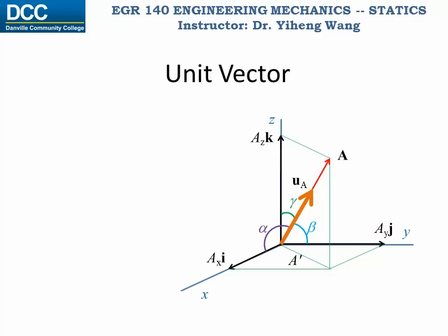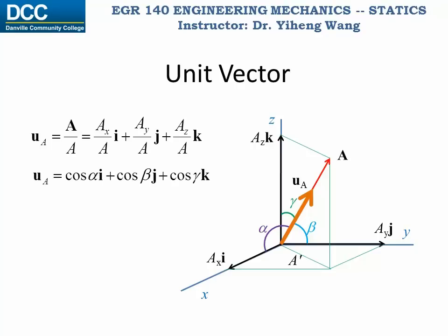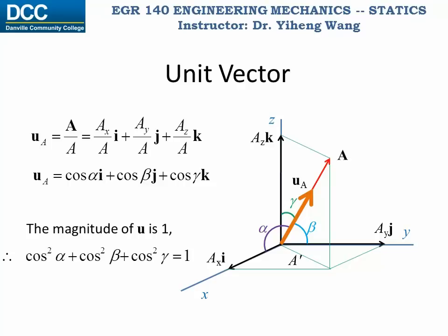Because the unit vector of vector a, u_a, equals vector a divided by its magnitude, u_a can be derived as (a_x/a)·i plus (a_y/a)·j plus (a_z/a)·k. Or equivalently, u_a equals cosine alpha·i plus cosine beta·j plus cosine gamma·k. And since the magnitude of a unit vector is always one, we can conclude that the sum of the cosine squared of the three coordinate direction angles for any Cartesian vector must equal one.